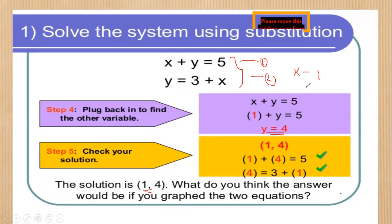So finally, x equals 1 and y equals 4. These two answers are the solutions to the simultaneous equations we were given.